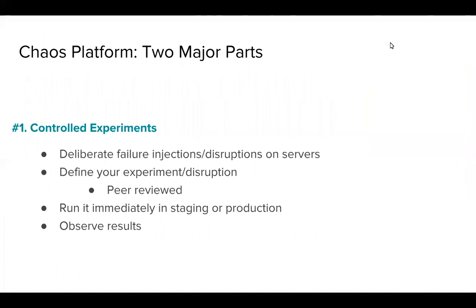Our chaos platform is divided into two major parts. The first is controlled experiments that you run yourself — you create deliberate failures on your own services or servers. You define the experiment or disruption through a configuration file using our own DSL, or domain-specific language. This config file lists all the different actions you want to take — for example, killing a service. The config file then gets peer reviewed by your team, because you don't want to be running disruptions willy-nilly. It's also a great way to track and reproduce the types of failures you want to recreate.